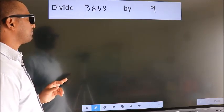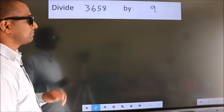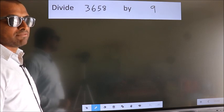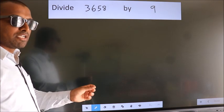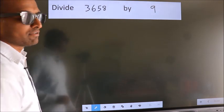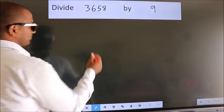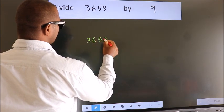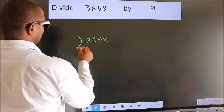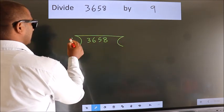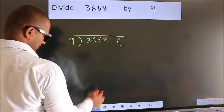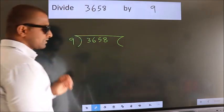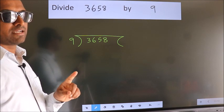Divide 3658 by 9. To do this division, we should frame it in this way: 3658 here, and 9 here. This is your step 1.